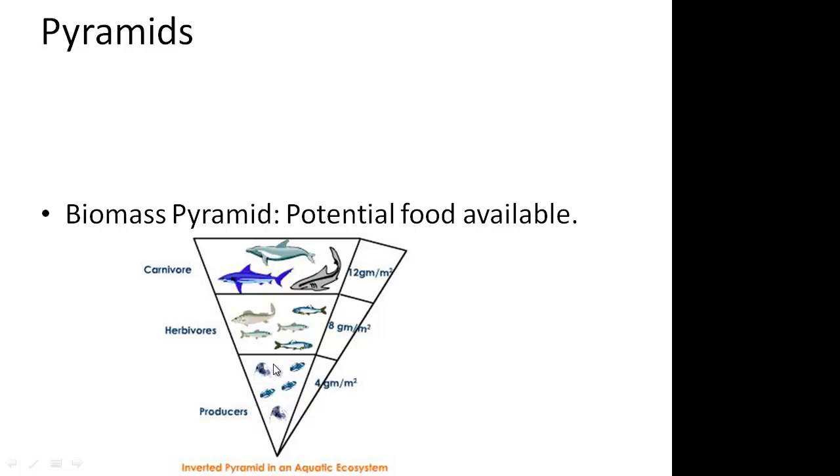Then we have a biomass pyramid. It shows us the potential food available. We can look at our numbers here, and we can see how each level, the amount of food increases.